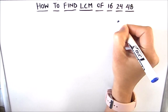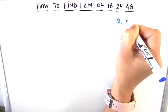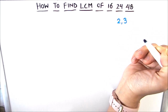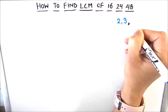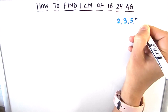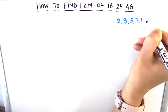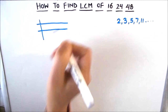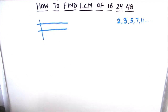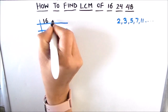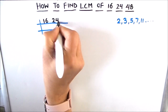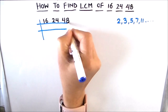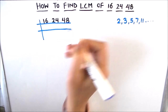I am going to write the first few prime numbers on the right-hand side of the board so that it is easy for us to use in our prime factorization method. The first few prime numbers are 2, 3, 5, 7, 11, and so on. For finding the LCM we are going to make a table, write all three numbers — 16, 24, and 48 — and divide them to find their factors.